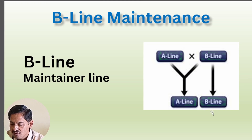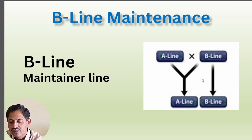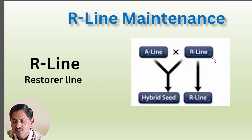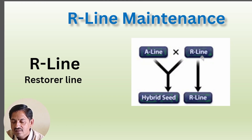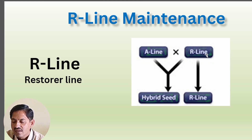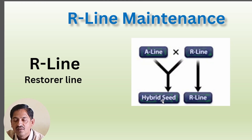Likewise, you can maintain the B line by growing it in isolation. The third and very important line is the R line. The importance of R line is in hybrid production: when we cross A line with R line, the A line is the female — it is male sterile so we don't need to do emasculation, because the male organ is not functional. The R line directly provides pollen to the A line to produce hybrid seeds.